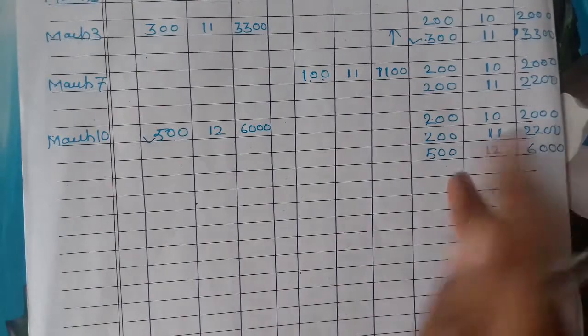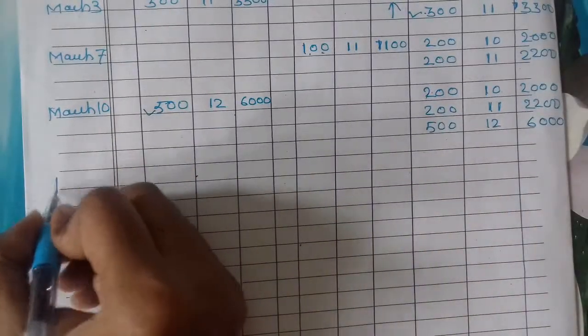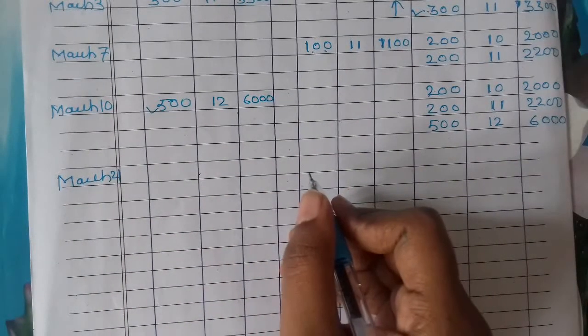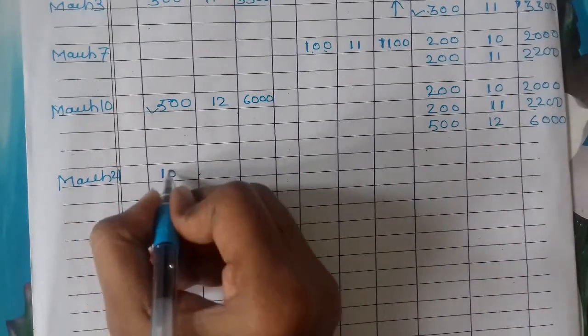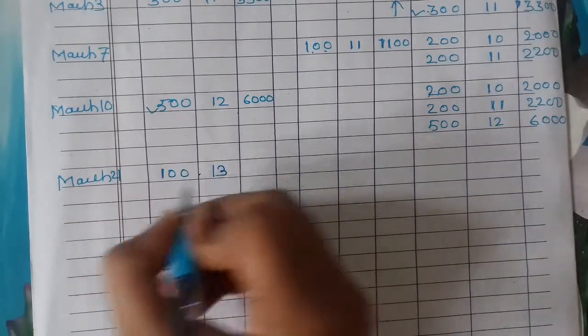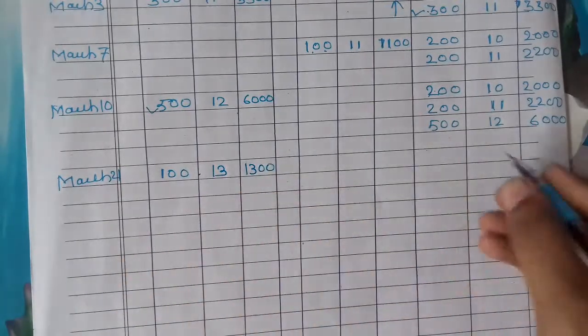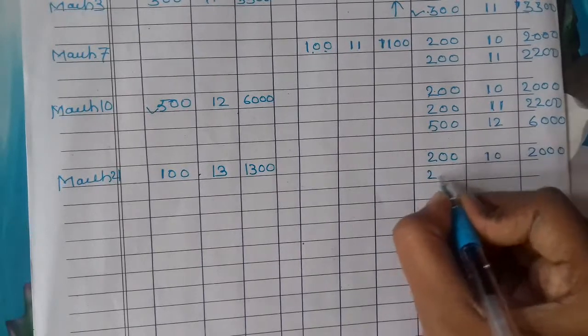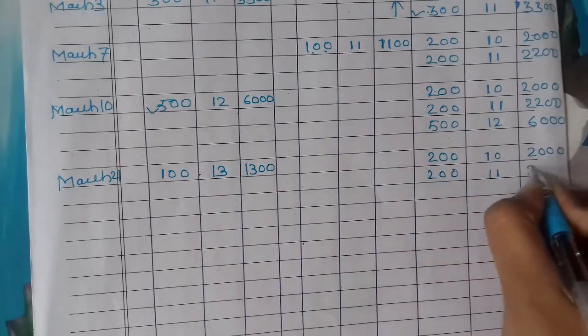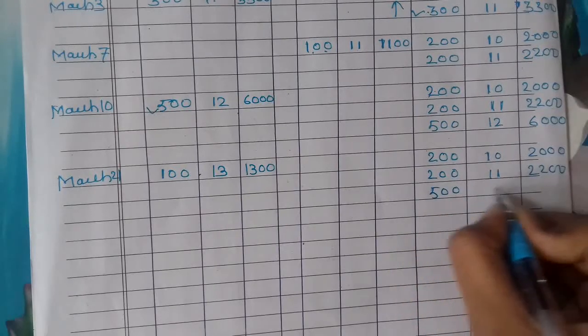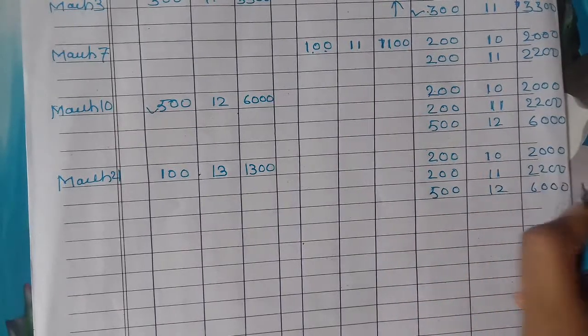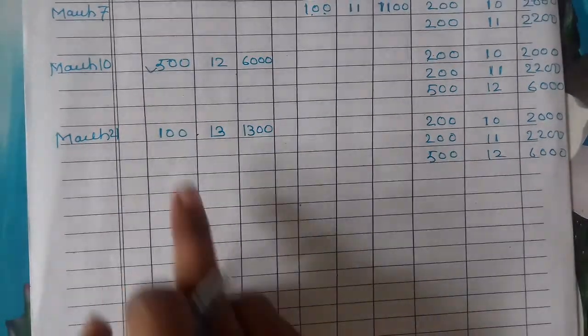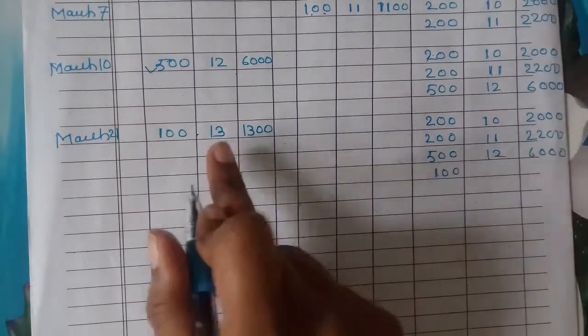Look at next transaction, March 21. On 21st, purchased 100 units at rate 13, amount 1300. Balancing figure in sequence: 200 at rate 10 is 2000, 200 at rate 11 is 2200, 500 units at rate 12 is 6000. The sequence doesn't change. Now 100 units at rate 13 is 1300, completed.